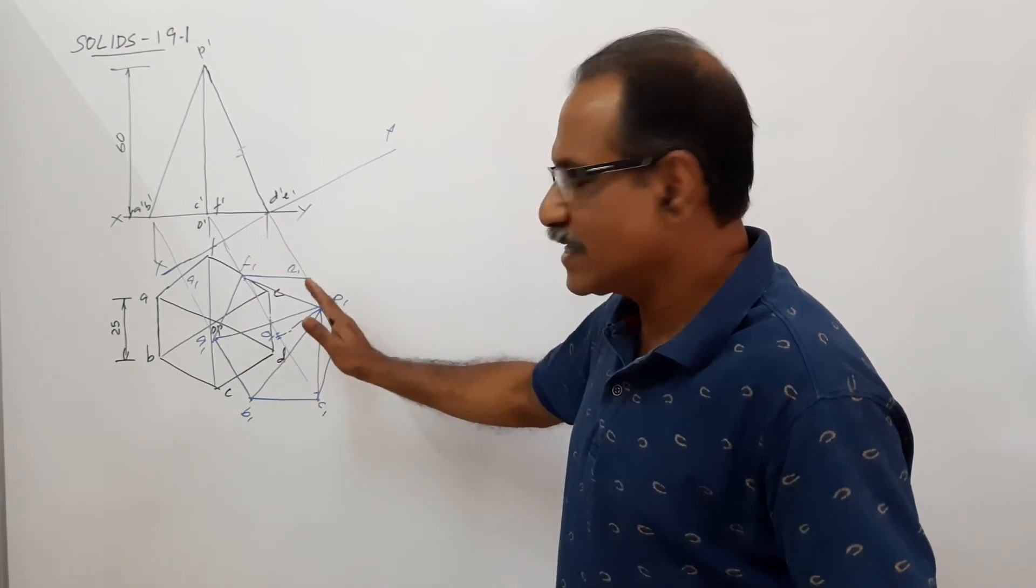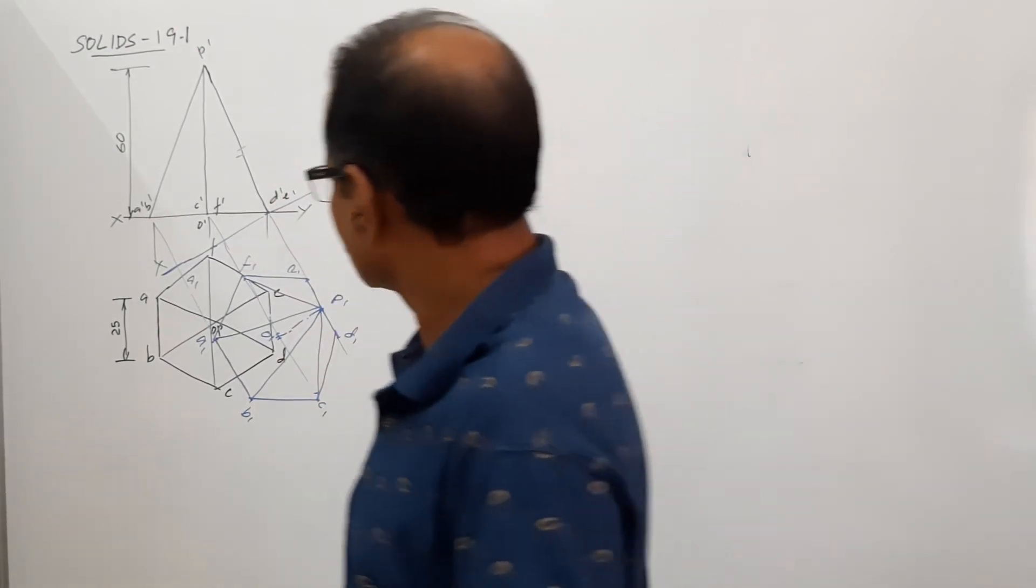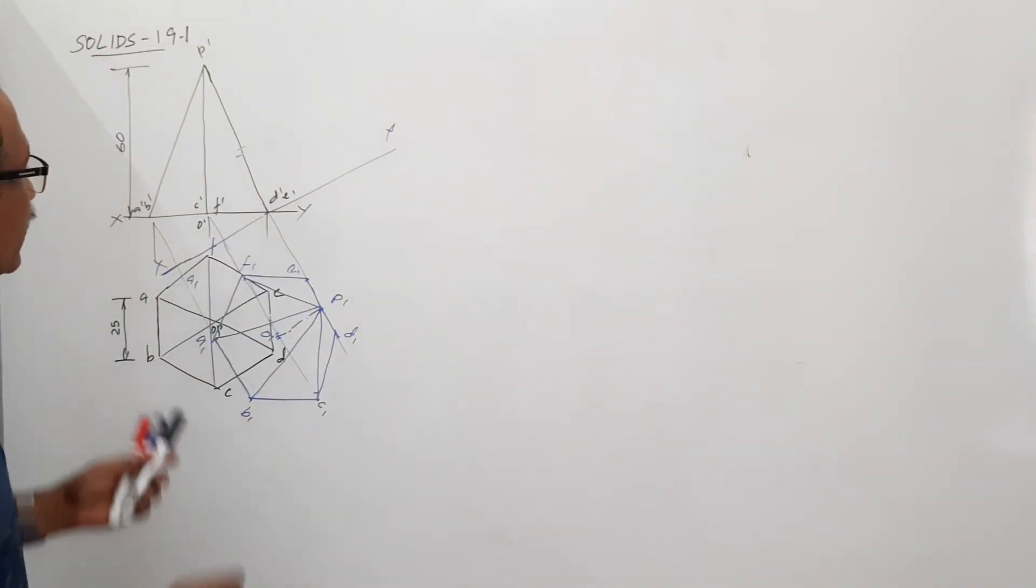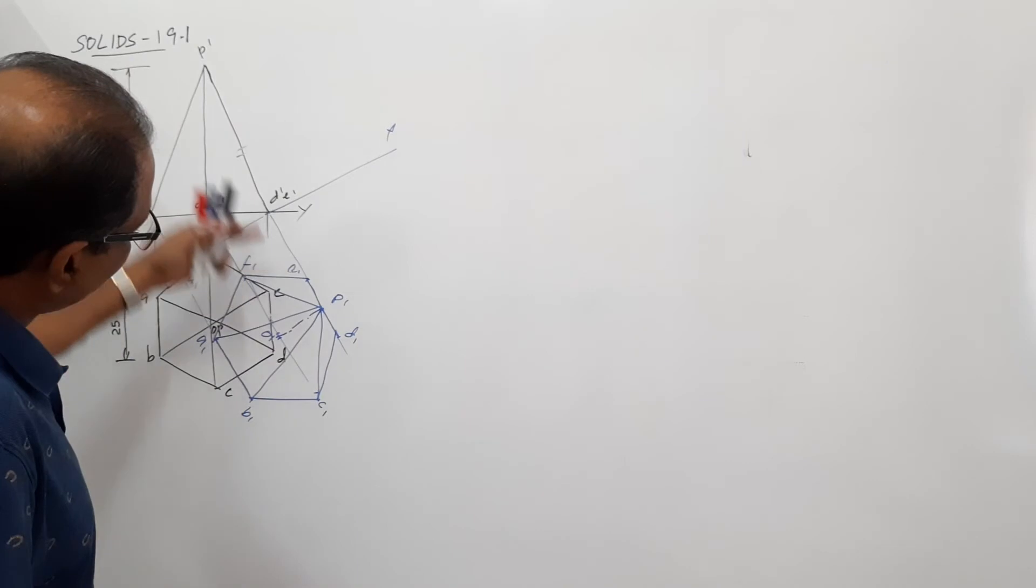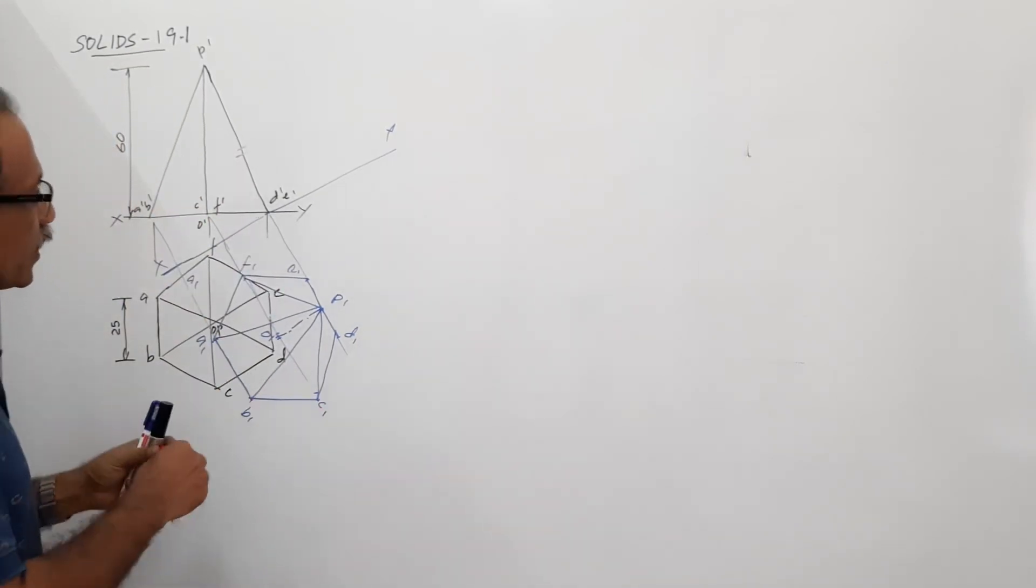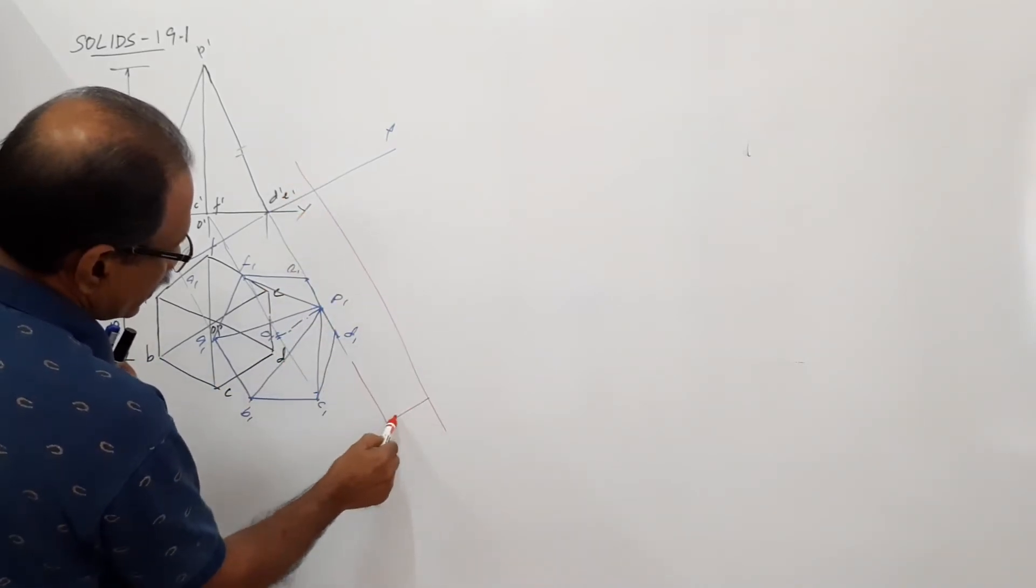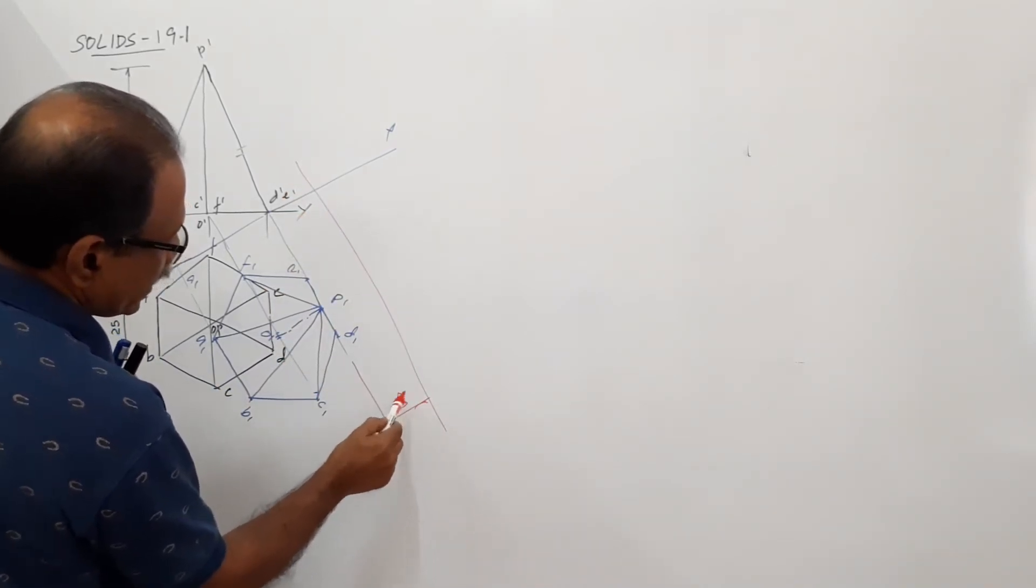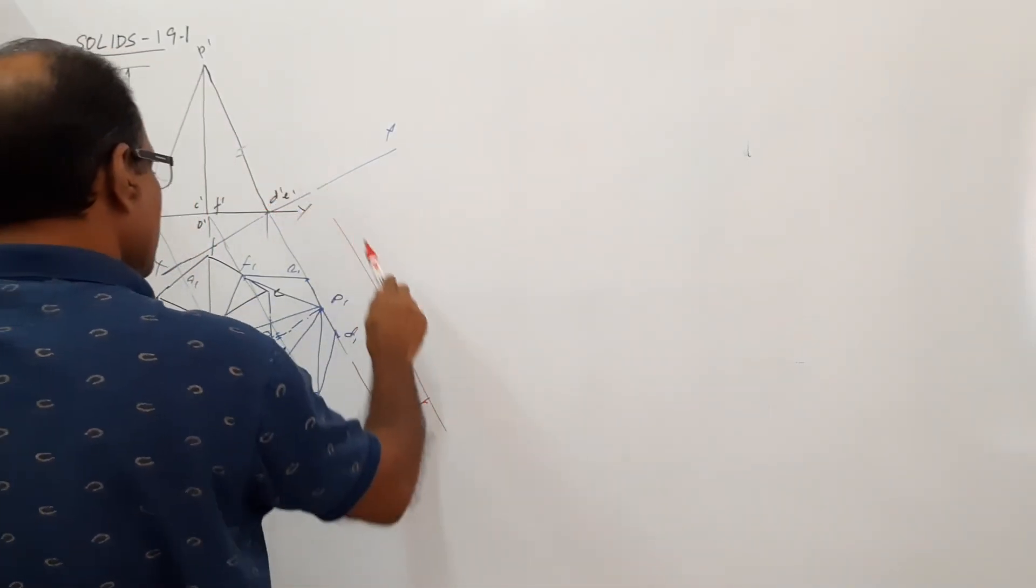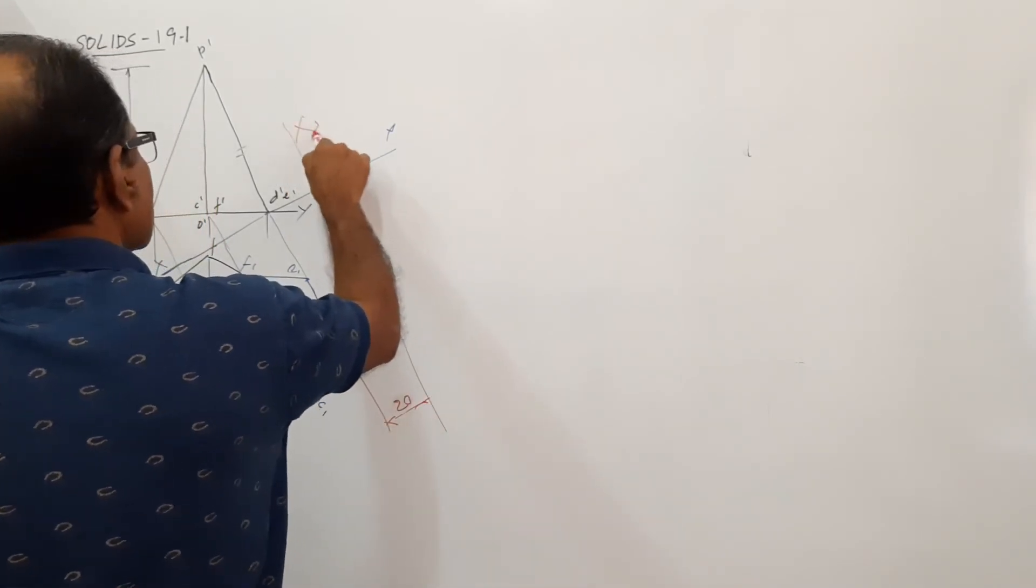Now, the triangle face CDE is perpendicular to VP now. It is perpendicular to VP now, it has to be made parallel to VP. This is a straight line but in my drawing it looks a little bit bent, assume it is straight line. What you have to do, you have to draw an x2, how much? 20.